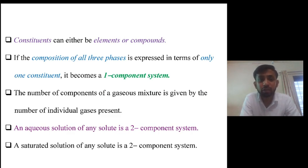One component system is the system in which the composition of all the three phases, that is solid, liquid and gaseous, is expressed only in one constituent. If we mix a number of gases, then the components are nothing but the individual gases present in that gaseous mixture.